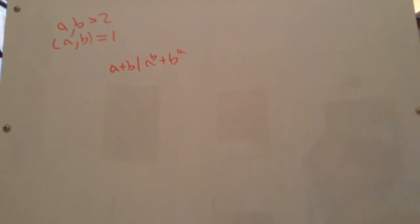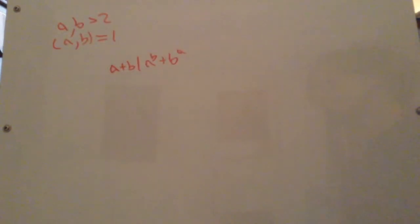So looking at this, there's not much I can really get off the bat, but I can try. a to the b and b to the a, that's a little annoying because we don't have the same exponent. But what if we did? If we look at this, we see that the greatest common divisor of a and b is 1.